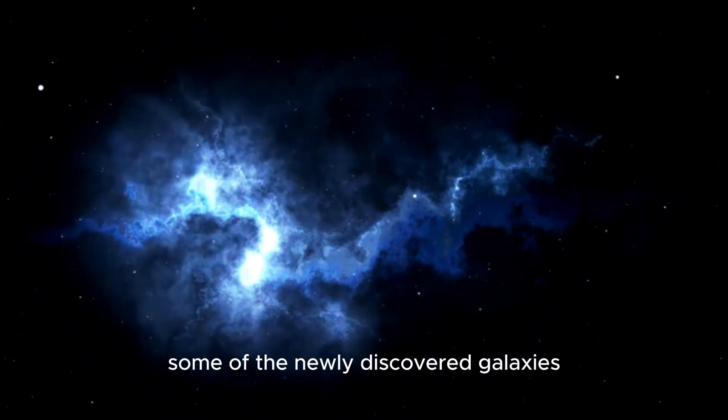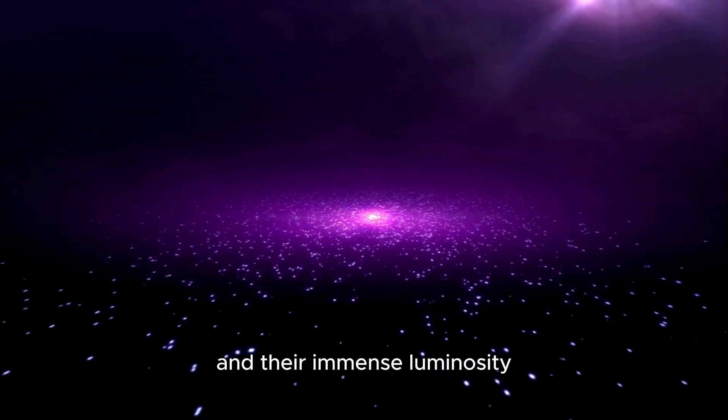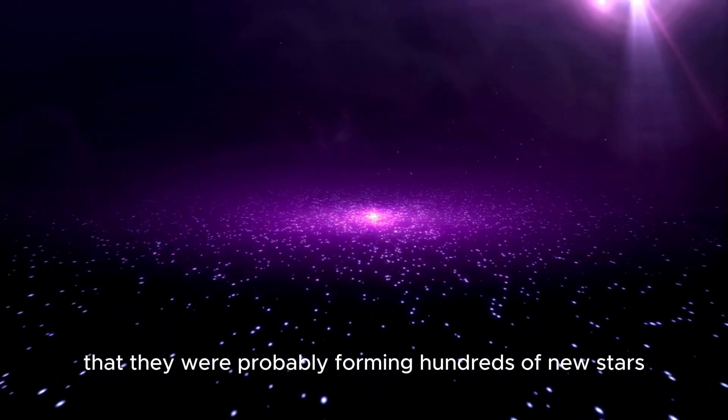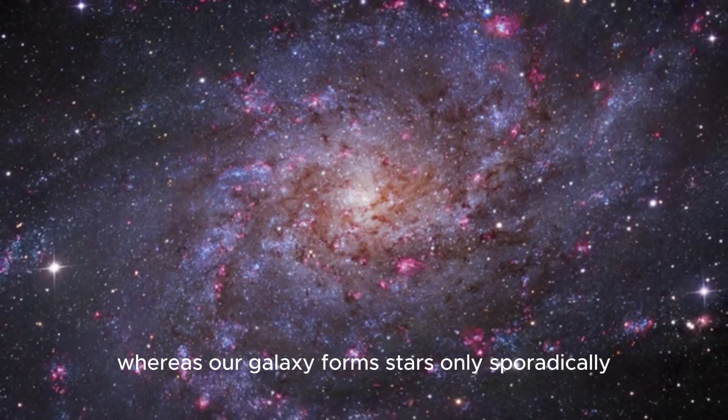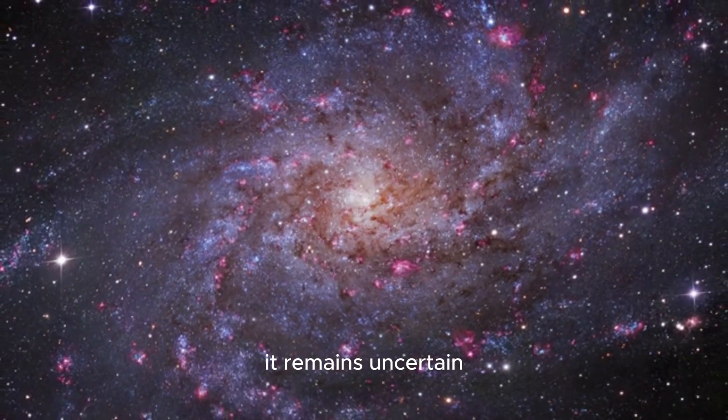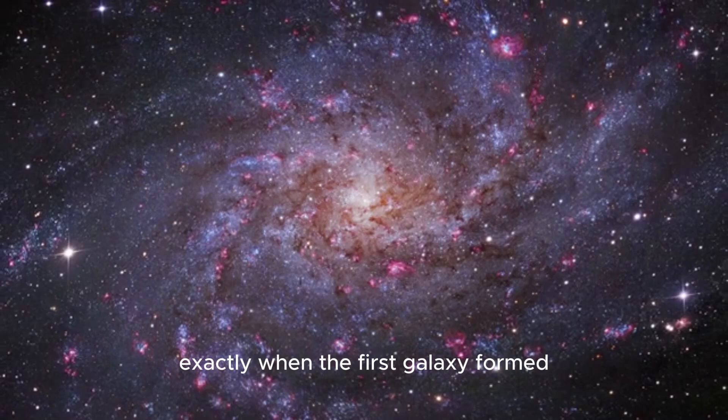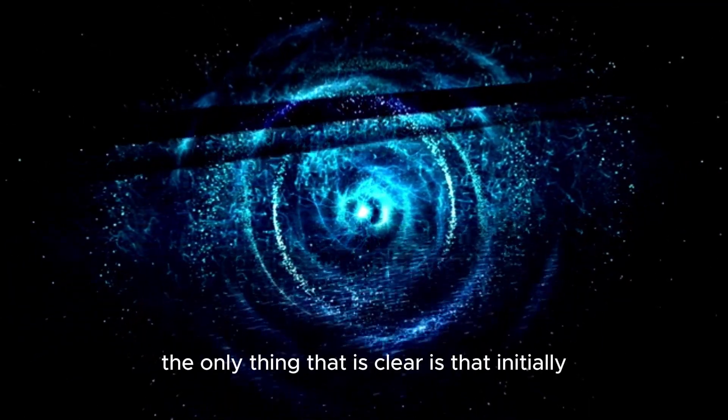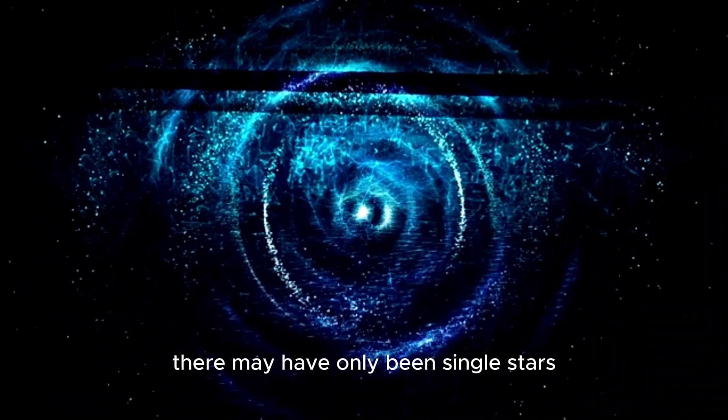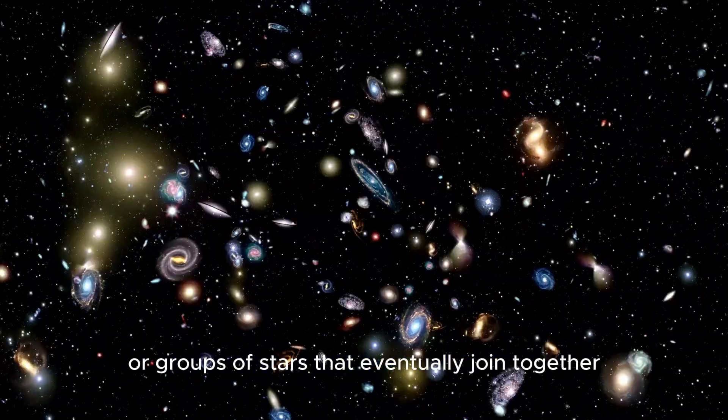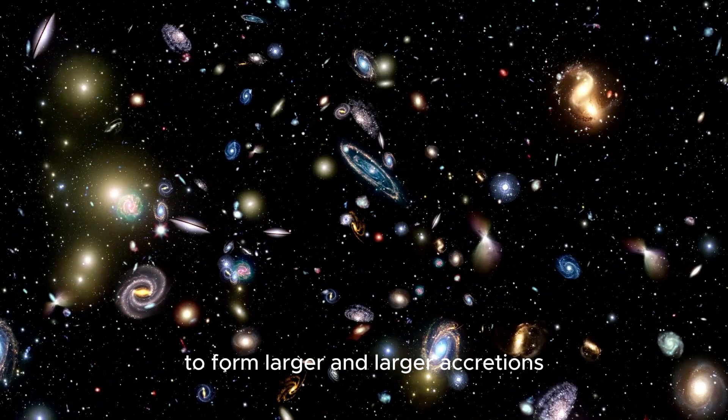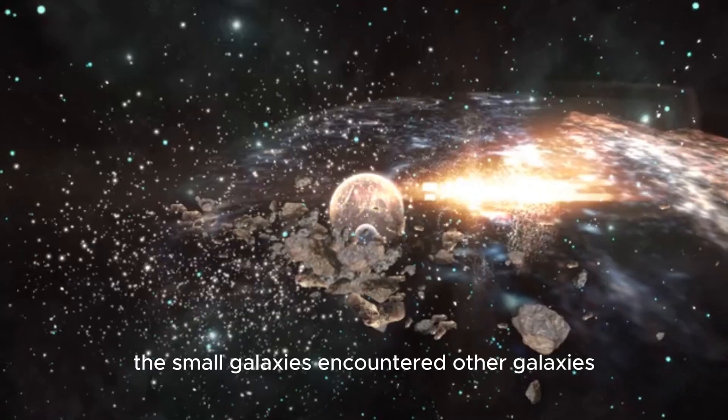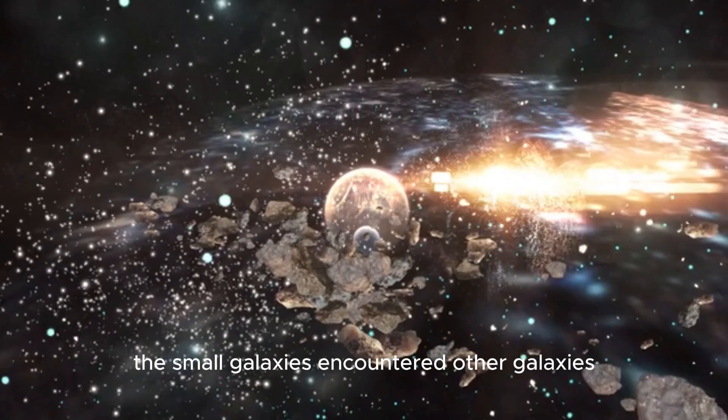Some of the newly discovered galaxies exceed the Milky Way in size, and their immense luminosity indicates they were probably forming hundreds of new stars each year, whereas our galaxy formed stars only sporadically. It remains uncertain exactly when the first galaxy formed. The only thing that is clear is that initially there may have only been single stars or groups of stars that eventually joined together to form larger accretions until dwarf galaxies developed.